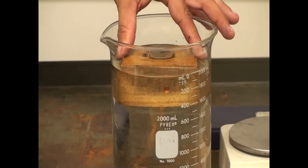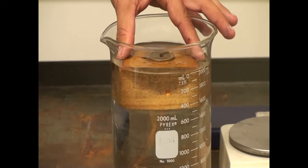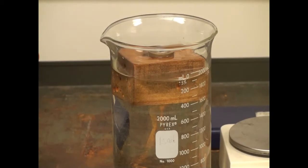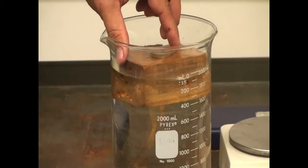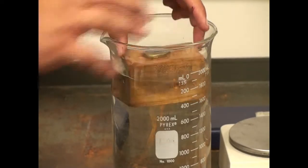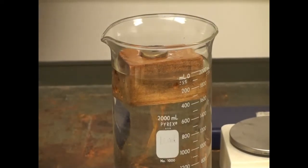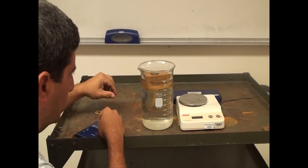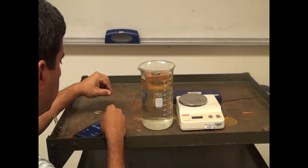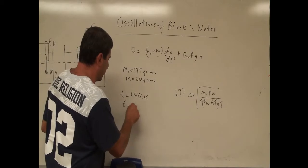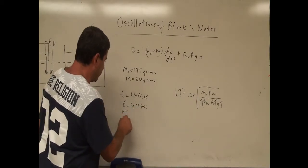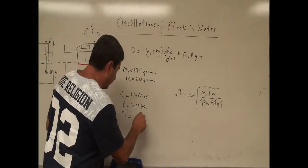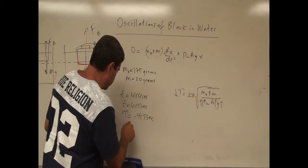I push it down and count the oscillations: 1, 2, 3, 4, 5, 6, 7, 8, 9, 10. I got 4.14 seconds. A second trial gives 4.15 seconds. So let's say the time was 4.15 seconds for 10 oscillations. The experimental period is 4.15 divided by 10, which is 0.415 seconds.